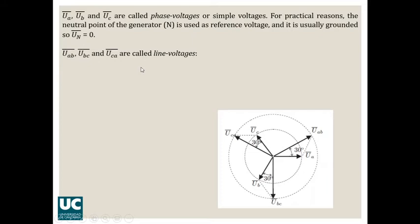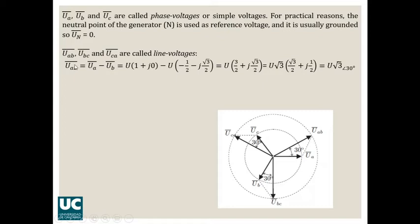Here, the line voltages can be obtained as the difference between the phase voltages. For instance, in the case of voltage UAB, its value could be obtained as the difference between UA and UB. If you have a look at the diagram here, UA has zero as angle, that is expressed by a direction of 1 plus j0, only a horizontal component.